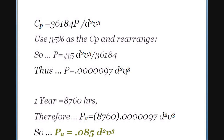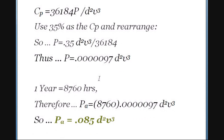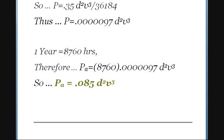This gives us a basic instantaneous power number, but I want it in kilowatt-hours per year. A year has 8,760 hours — that's 24 hours a day times 365 days. Multiplying that factor in gives the final simplified annual energy equation: Annual Power = 0.085 × d² × v³. Pretty simple.